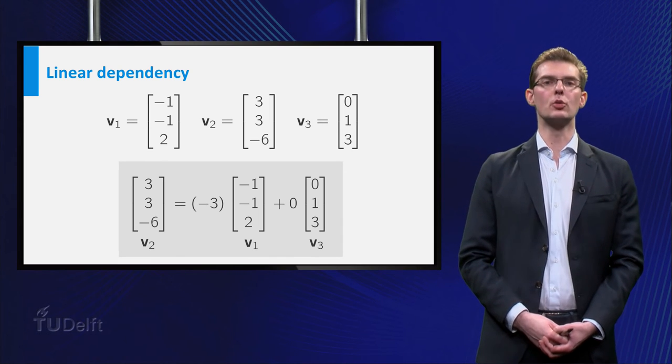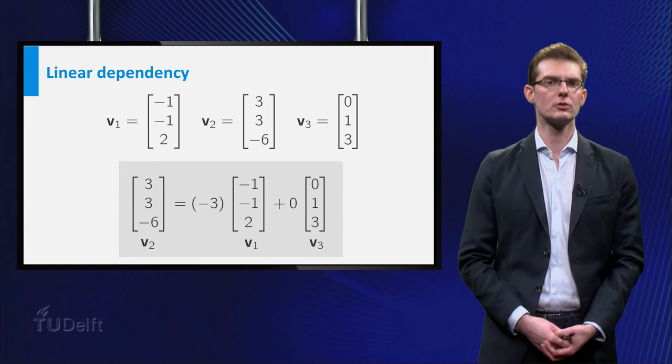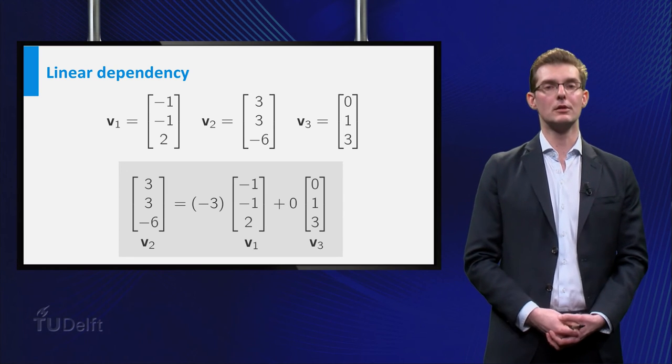So V2 is equal to a linear combination of the other vectors, which means that they are linearly dependent.